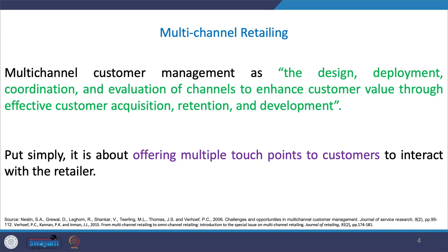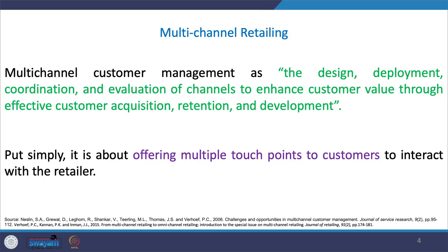Giving customers the option to buy through mobile, physical store, desktop apps, catalog shopping, or telemarketing — collectively when you offer all these touch points, this is called multi-channel retailing. Each standpoint is going to be a standalone touch point in all complete ways, with no interconnectivity between these touch points.